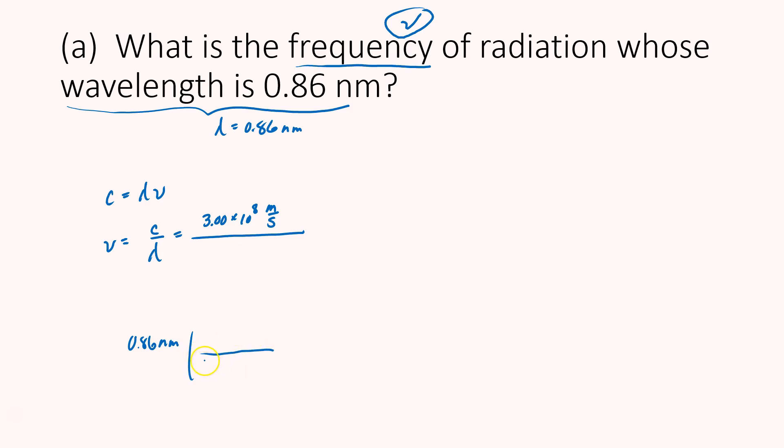And I might say that for every 1 times 10 to the 9th nanometers, I have 1 meter. And if I do the arithmetic, I get 8.6 times 10 to the negative 10th meters. So I just put my answer here, and look how nice this is. Meters cancel out, and my units are going to be 1 over seconds, or reciprocal seconds, or hertz, which is the unit for frequency. So let me do this arithmetic.